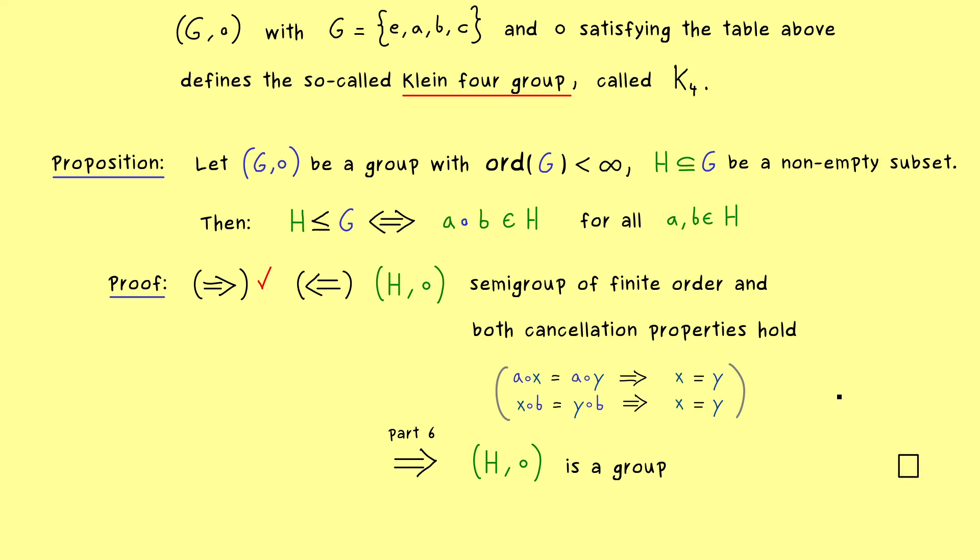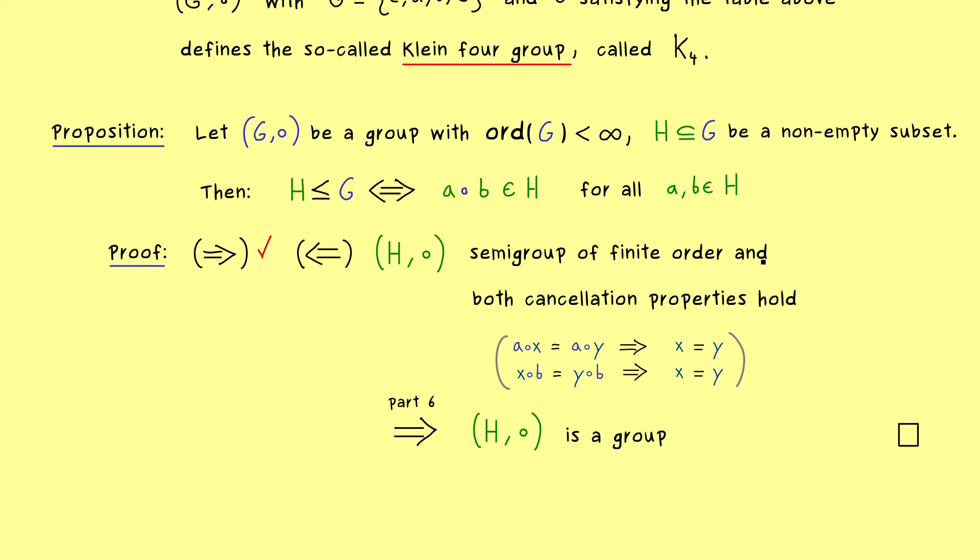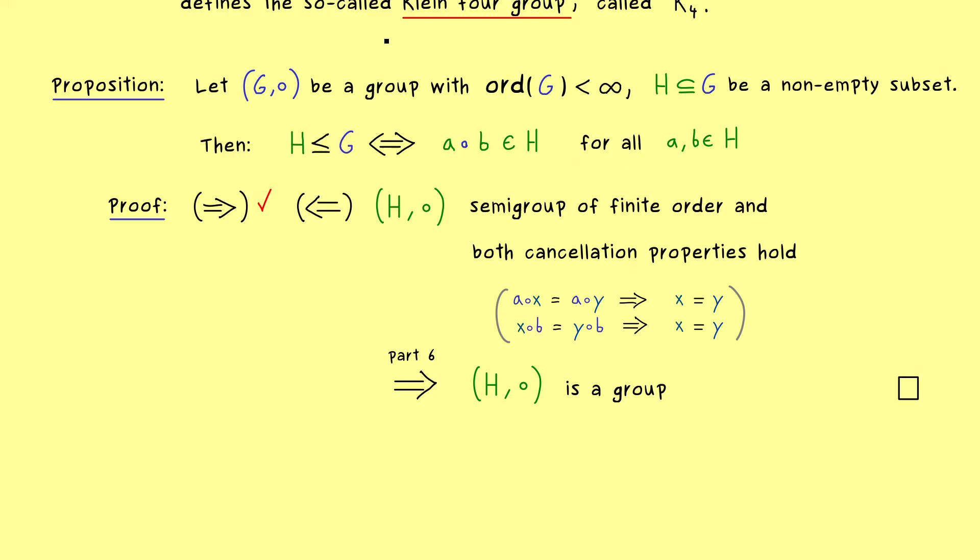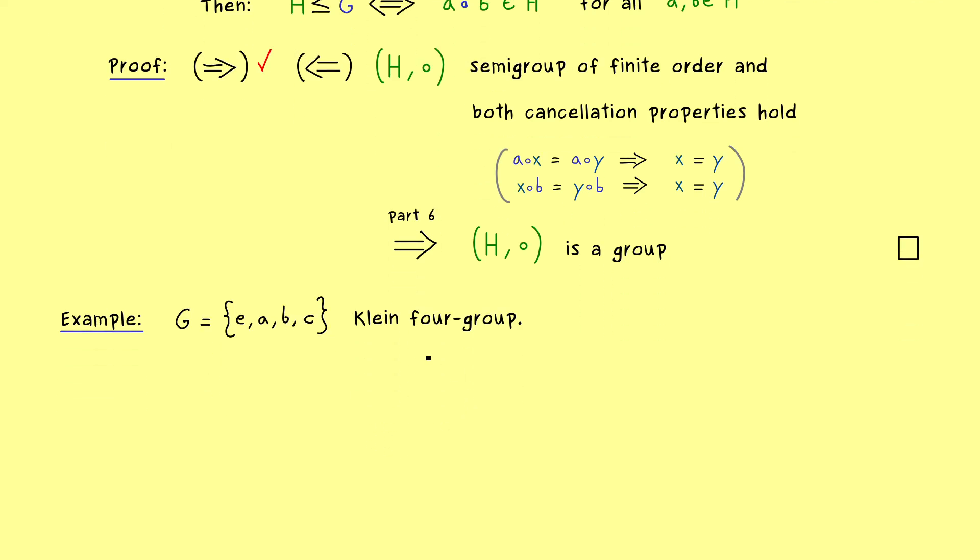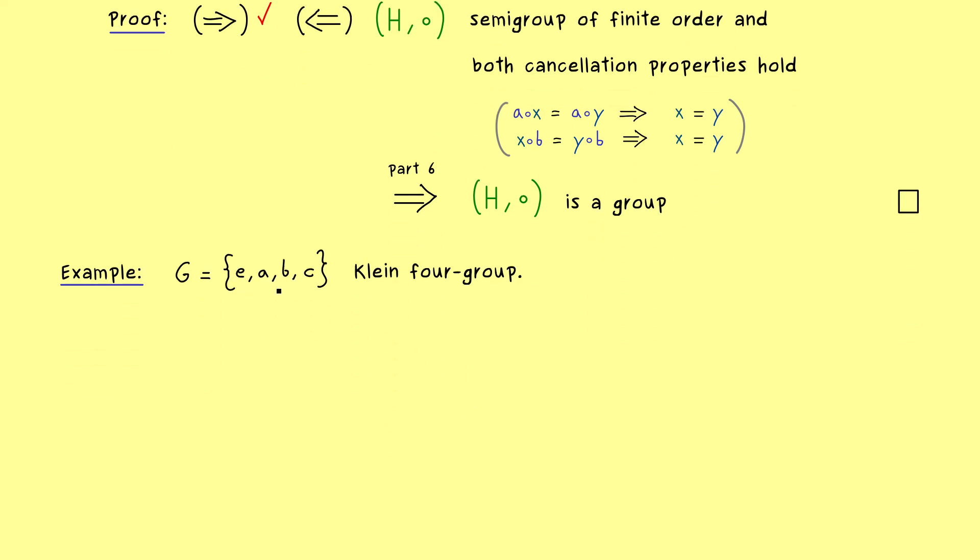And now, as promised, this proposition we can use to look at the subgroups of the Klein four-group. So we can say this is the important example of this video. So here we take the same names as before: we have the Klein four-group with the four elements E, A, B, and C. And now I can already tell you a subgroup H1, namely the one that only includes the neutral element.